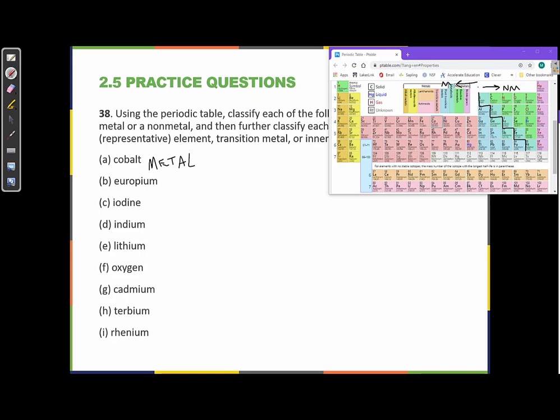And it is further a transition metal because it's in this pink, or I guess it's salmon-colored, this kind of salmon-colored middle region here from element 21 to 30, all of those columns. So this is a transition.